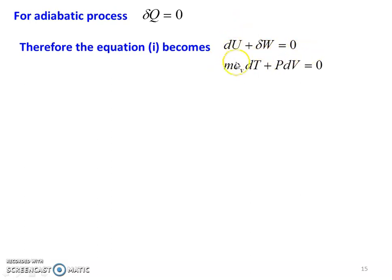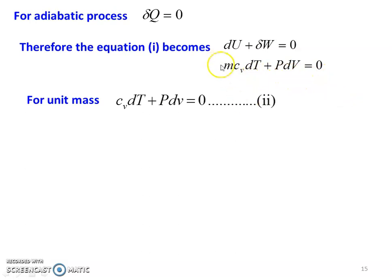The change in internal energy du equals m·Cv·dT, and the work term delta W equals p·dv. So for the adiabatic process: m·Cv·dT plus p·dv equals zero. Dividing by mass for unit mass: Cv·dT plus p·dv equals zero, where capital V becomes specific volume v. This is equation number 2.